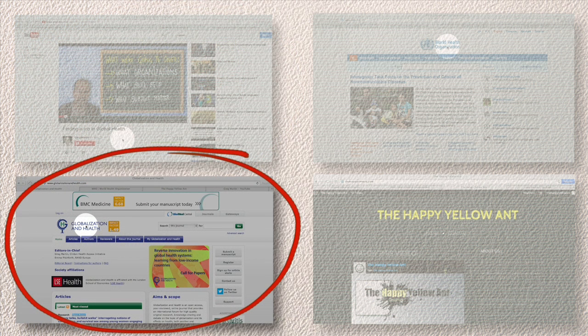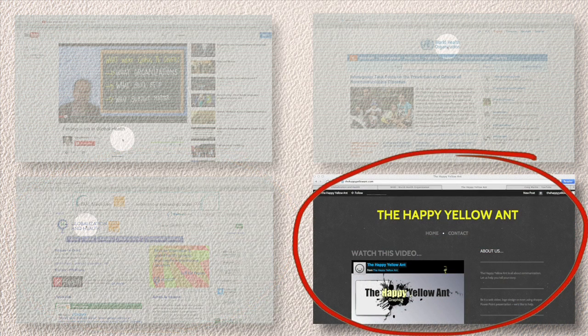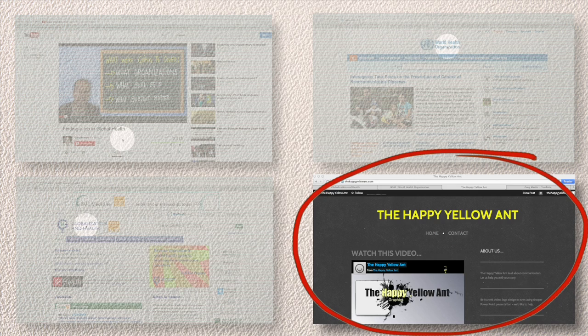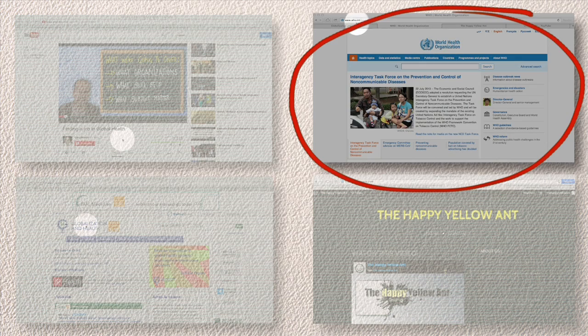You can get more information on this and other topics at globalizationandhealth.com. Globalization and Health is an open access peer-reviewed online journal. And of course thanks very much to the happyyellowant.com for providing the graphics. These facts and figures are available at the World Health Organization's webpage www.who.int.